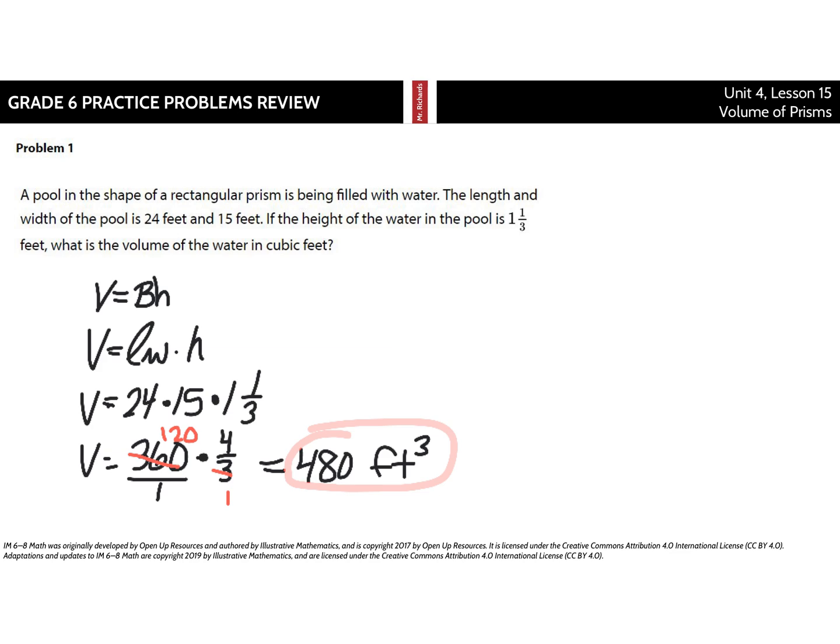Well, for rectangular prisms and really any prism we can find the volume to be the area of the base times the height. The base is length times width, that's going to be our 24 times 15, which gets us 360 times our height which is one and a third. 360 is 360 over 1, one and a third is 4 thirds. You can cross simplify here by taking a 3 out of both the 360 and the 3, you get 120 and 1, and lastly 120 times 4 is 480 and 1 times 1 is 1, so our answer is 480 cubic feet.